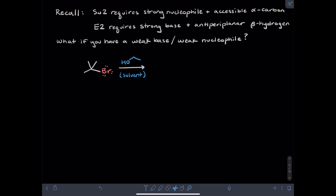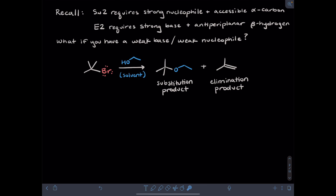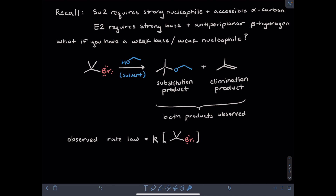Let's consider the following tertiary alkyl bromide, dissolved in ethanol solvent. Two products are observed. In the substitution product, the bromine has been replaced by the O and the ethyl group of the solvent, but the oxygen has lost its proton. An elimination product — an alkene — is also observed. The observed rate law is that the rate equals the rate constant times the concentration of alkyl halide, which we would call a unimolecular rate law because it only depends on one molecule. Because it's unimolecular rather than bimolecular, our mechanism can't be either SN2 or E2, and we'll need a new mechanism to explain this reactivity.